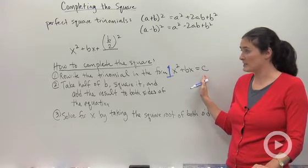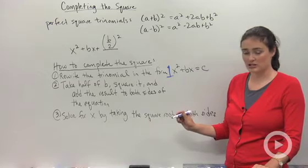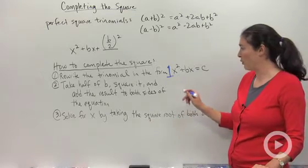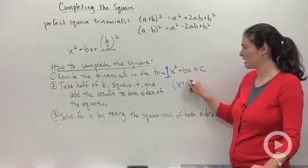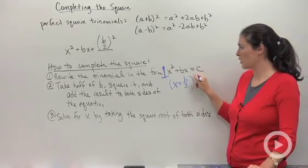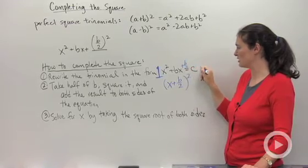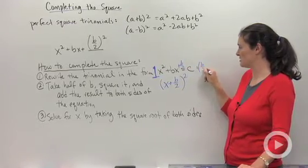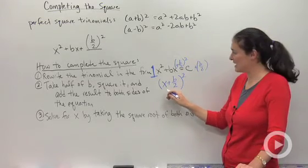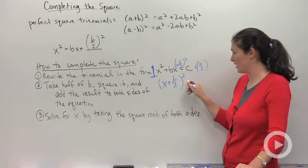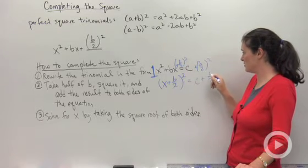The next thing you do is take half of your b term, square it, and add the result to both sides of the equation. What I would do here is take half of b, b/2, square that quantity, and then add it to both sides of this equation. So what I'm going to have is (x + b/2)² = c + (b/2)². That will make a lot more sense once we start working with real numbers. I just wanted to show you what this looks like with symbols.